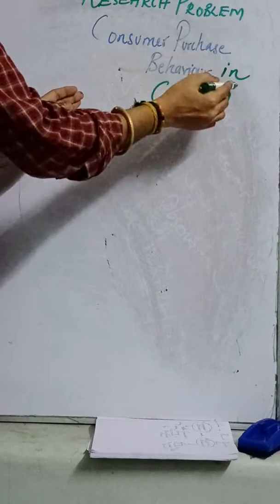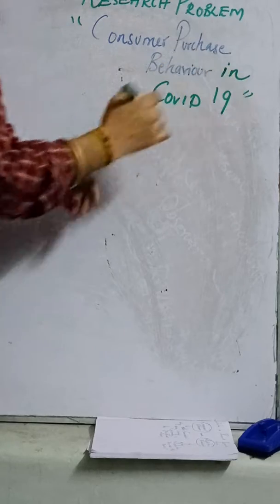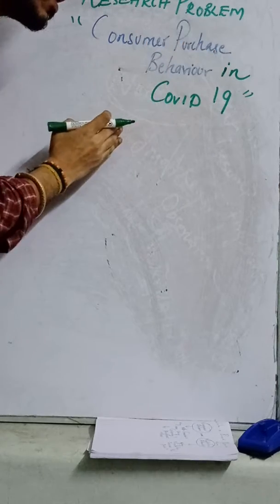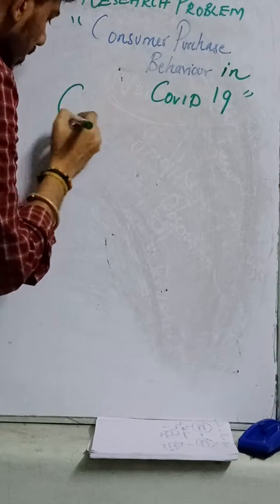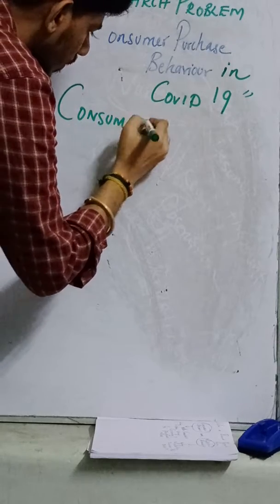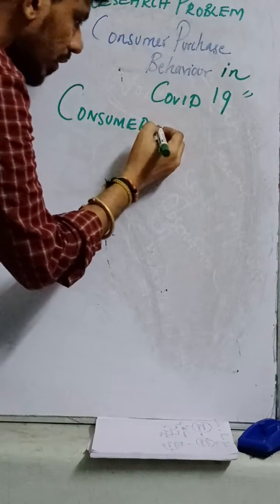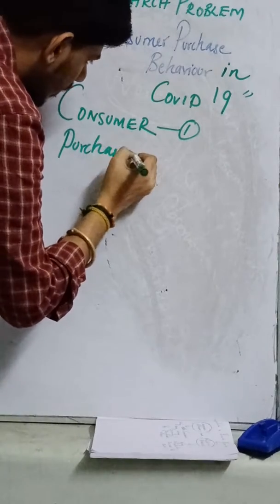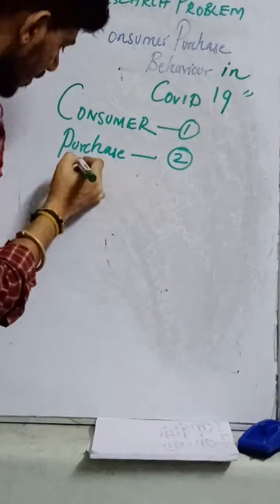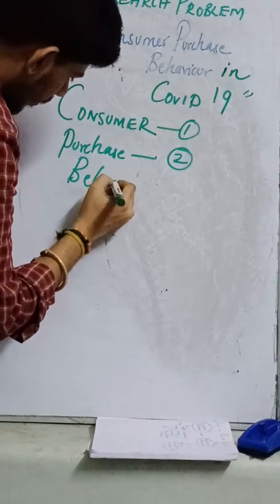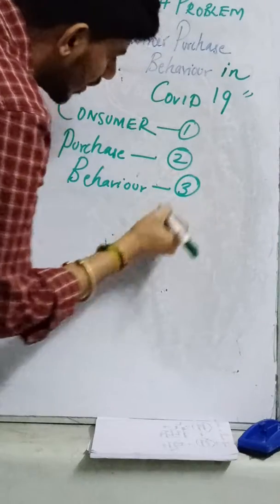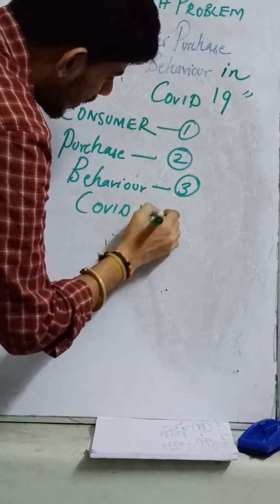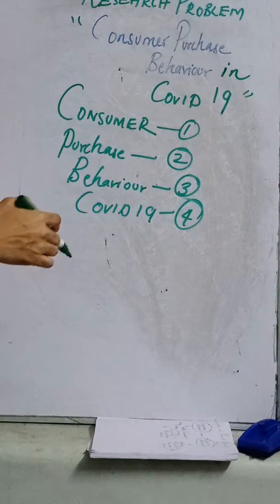This is going to be my research title. Before constructing the problem statement, split the research title into different parts. Consumer is one important terminology. Purchase is the second important terminology. Behavior is the third important terminology. COVID-19 is the fourth important terminology.